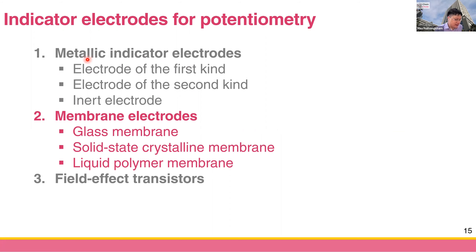The next half is your indicator electrode. There are many kinds of indicator electrodes used for potentiometry, which I divide roughly into three kinds. The first is called the metallic indicator electrode, made from metal, which has three types: electrode of the first kind, electrode of the second kind, and inert electrode. The second type is membrane electrodes, including glass membrane electrode, solid state crystalline membrane, and liquid polymer membrane. The last type is called the field effect transistor.